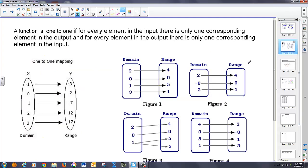Now, functions are one-to-one if for every element in the input, there's only one corresponding output element, and for every element in the output, there's only one corresponding input value. So you'll see here, here's a one-to-one mapping. Every element in the input goes to exactly one element in the output, and likewise, they'd all go backwards as well.